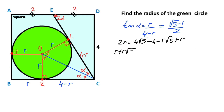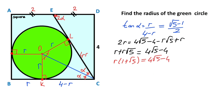So r plus r times root five equals four root five minus four. Putting r in parentheses: r times (one plus root five) equals four root five minus four. Therefore, r equals (four root five minus four) over (one plus root five).